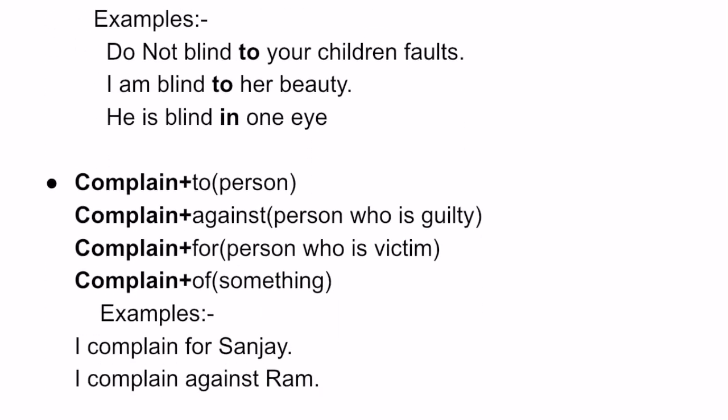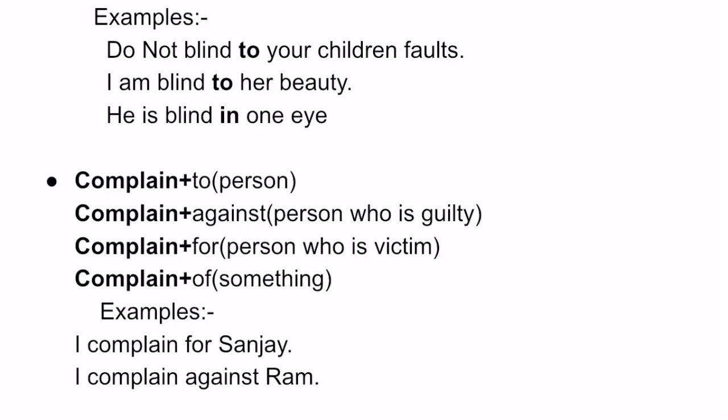Coming to the next word: 'complain.' With 'complain,' we use four different kinds of prepositions: 'to,' 'against,' 'for,' and 'of.' All four are a little bit confusing — they differ mainly in meaning rather than in person versus thing. 'Complain to' refers to the person to whom we go and give the complaint. For example, 'I will complain to police' — I am going to the police and giving a complaint. 'Complain against' means we are giving a complaint regarding the person who is guilty. For example, 'I complain against Ram' — Ram has committed some mistakes, so I am complaining about him.